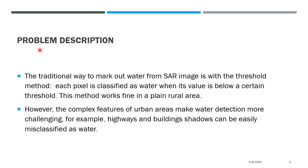As we have seen, the water body can be easily identified from a SAR image. The traditional way to extract water from a SAR image is using the threshold method. This method works with each pixel's information — when a pixel value is below a certain threshold, we can classify it as water. This method actually works very well in rural areas, but in an urban area it is not so good, as we will describe in the next slide.